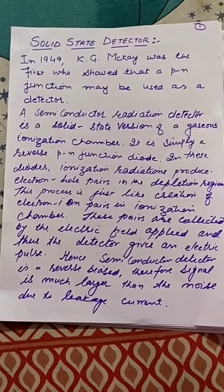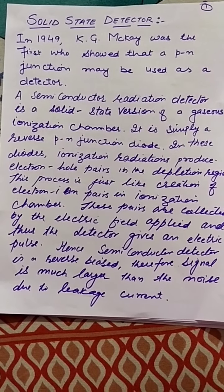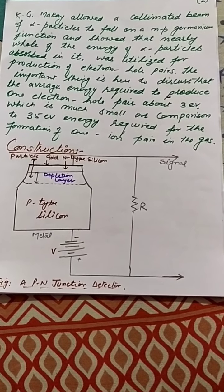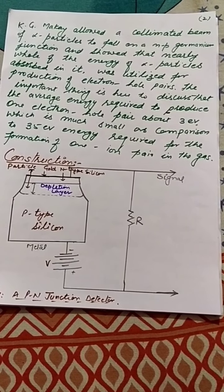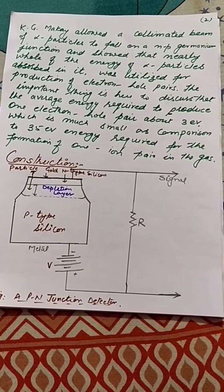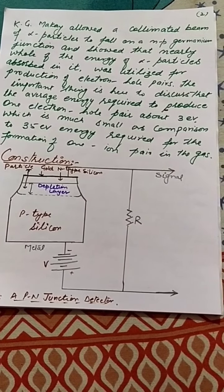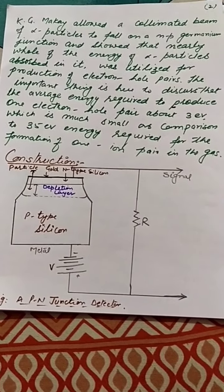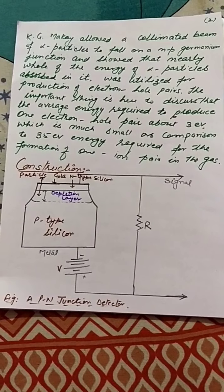Since the semiconductor device detector is reverse biased, the signal is much larger compared to noise due to leakage current. McKay allowed a collimated beam of alpha particles to fall on a PN germanium junction and showed that nearly all of the energy absorbed was utilized for production of electron-hole pairs. The important thing to note is that the average energy required to produce one electron-hole pair is approximately 3 electron volts, which is very small compared to 35 electron volts required for ion pair formation in gas.